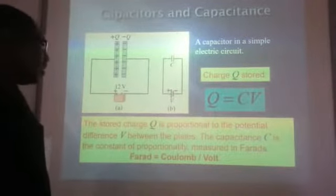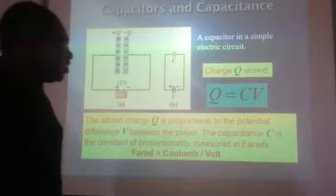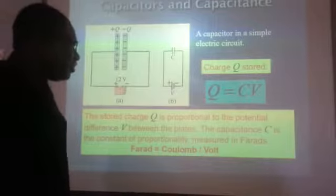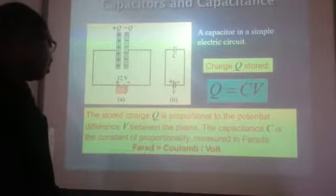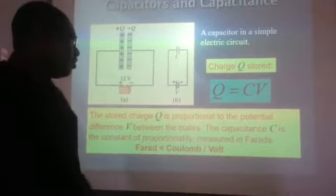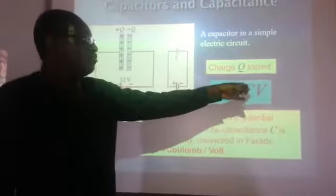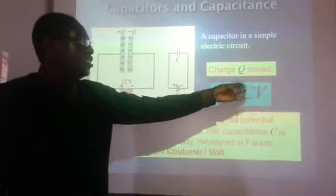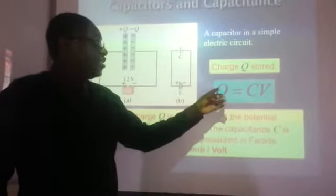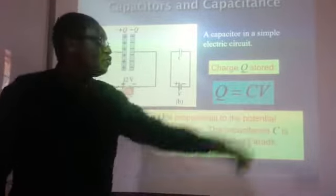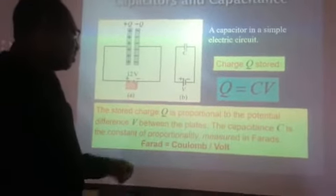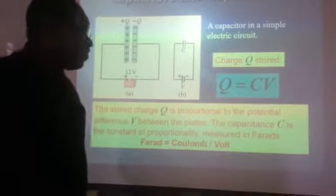The stored charge Q is proportional to the potential difference V between the plates, and the capacitance C is the constant of proportionality — so Q is directly proportional to V. Capacitance is measured in Farads.